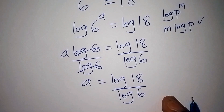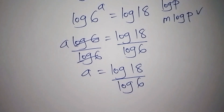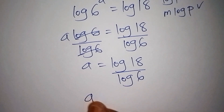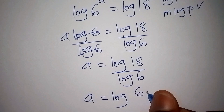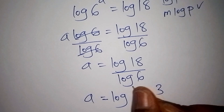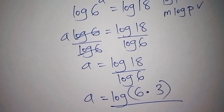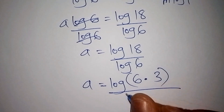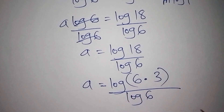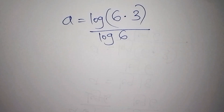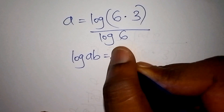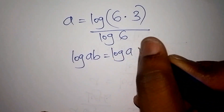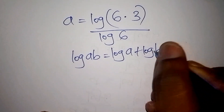We can simplify log 18 over log 6 by noting that 18 equals 6 multiplied by 3. So a equals log of (6 × 3) all over log of 6. Using the product rule, log of ab equals log of a plus log of b.